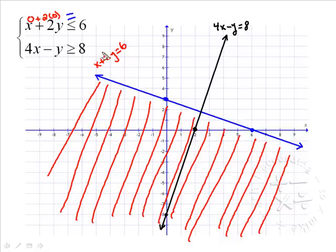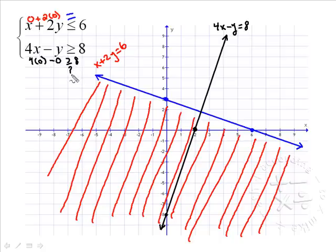Now we'll shade this one as well. We can pick the origin — you can pick any point as long as it's not on the line, and the origin is not on that line. We'll put 0 in for x and 0 in for y. Notice this one is false: 0 is not greater than or equal to 8. Since 0, 0 is to the left of the line and it made it false, that means to the right of the line must be true. So we're going to shade to the right of the line.